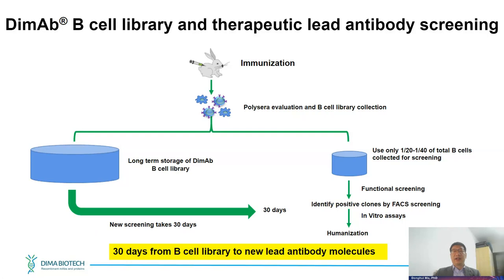Our technology is highly efficient — in most cases we only use one-twentieth to one-fortieth of the total B cells collected for one round of screening, typically gathering several hundred possible clones per round. The remaining B cells are stored in liquid nitrogen for future screening — we can always retrieve them if more clones are needed. After approximately 30 days of development, we have new clones. We call this the B cell library technology, or D Libraries.